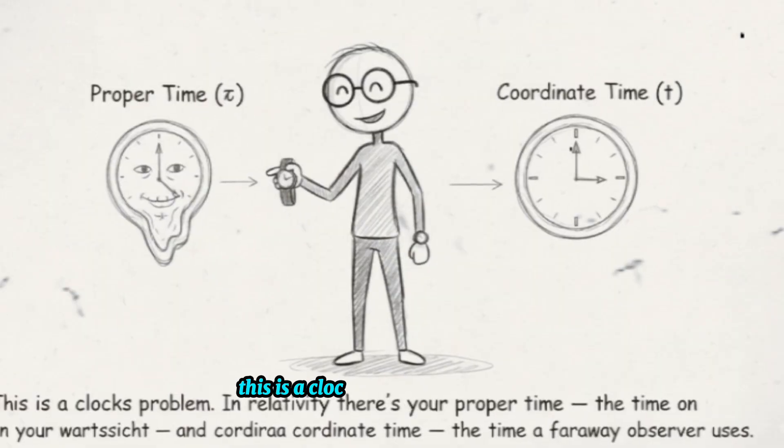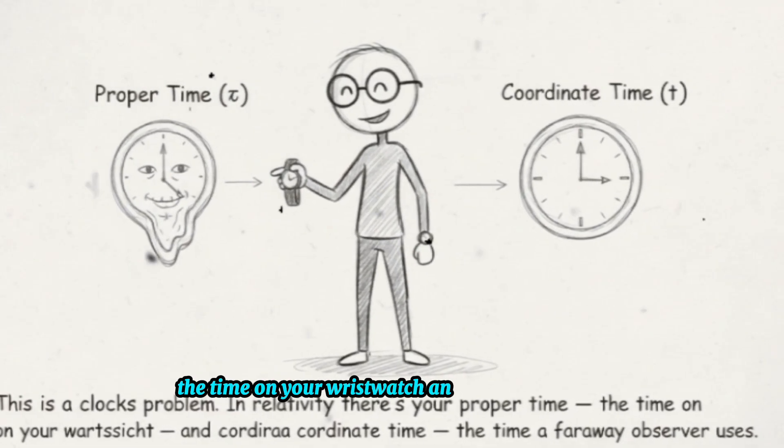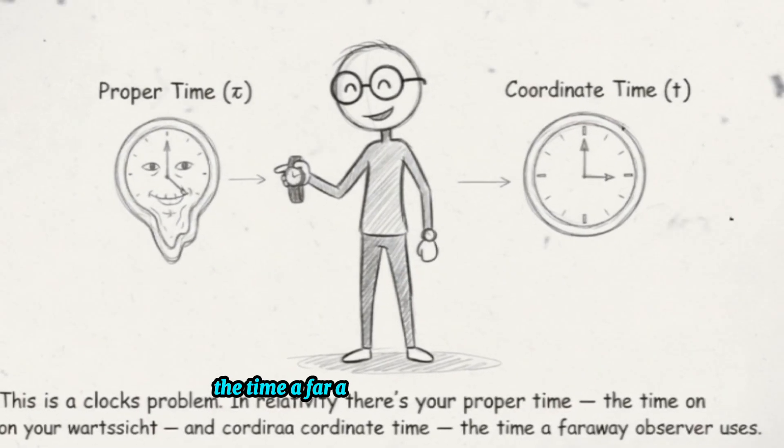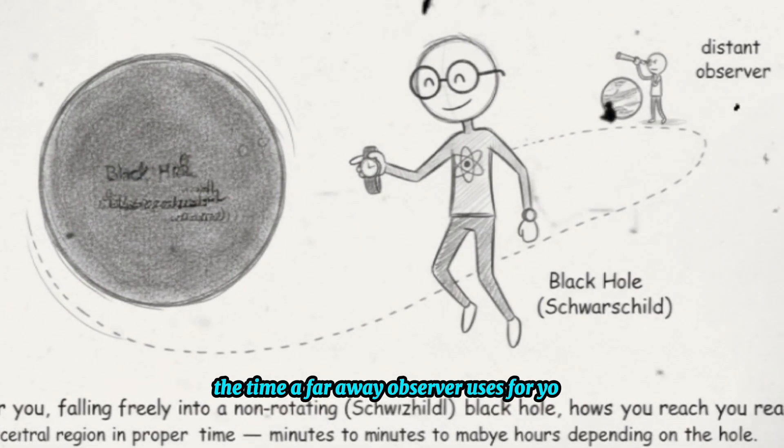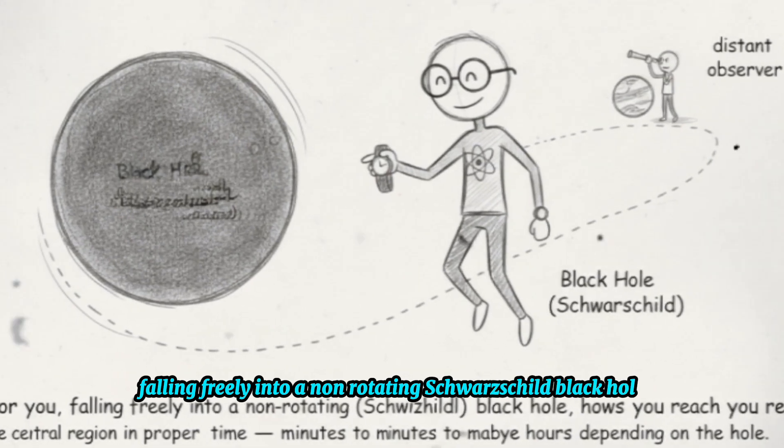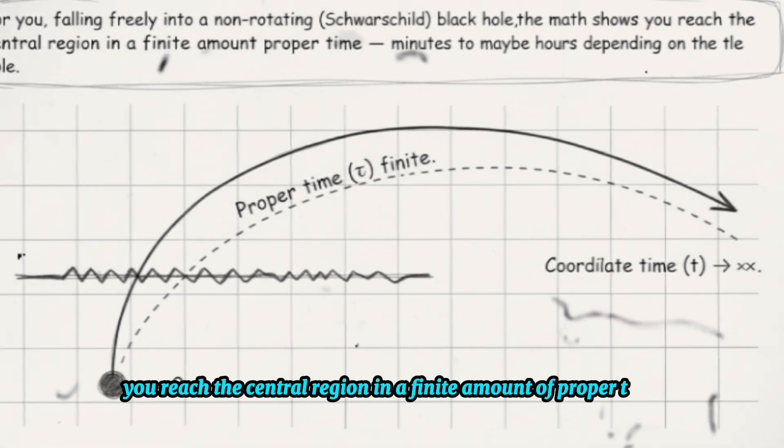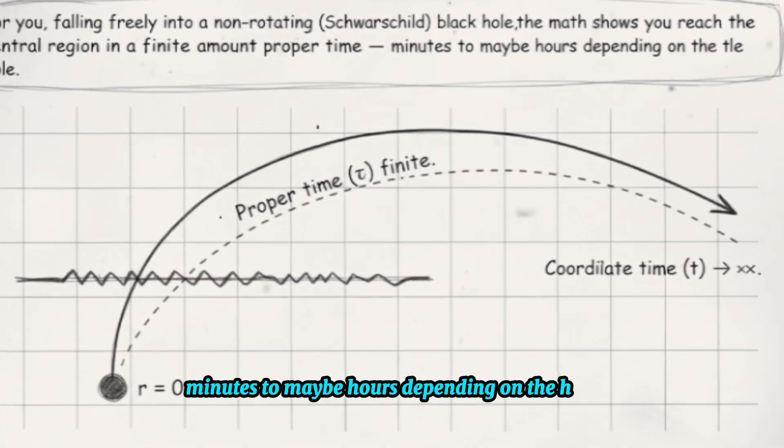This is a clocks problem. In relativity, there's your proper time, the time on your wristwatch, and coordinate time, the time a faraway observer uses. For you, falling freely into a non-rotating Schwarzschild black hole, the math shows you reach the central region in a finite amount of proper time. Minutes to maybe hours, depending on the hole.